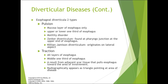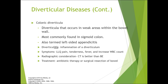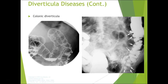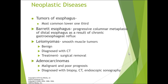Colonic diverticula occur in weak areas of the bowel wall, most commonly in the sigmoid colon — also termed left-sided appendicitis. Diverticulitis is inflammation of the diverticulum. Symptoms include left lower quadrant pain, tenderness, fever — fever is key — and elevated white blood cell count. CT is better than barium enema for diagnosis. Treatment is antibiotic therapy and bowel resection if severely problematic. All those little outpouchings are diverticula; if inflamed, it's diverticulitis.